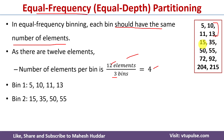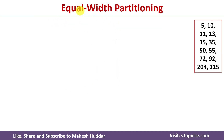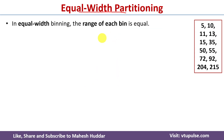So bin 1 contains the first four data points, bin 2 contains 15, 35, 50, and 55 as data points, and the third bin contains the last four data points. This is the bin created using equal frequency partitioning.